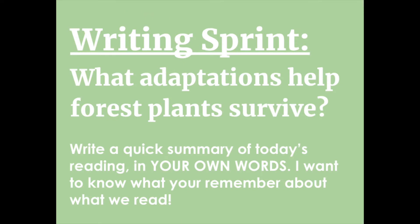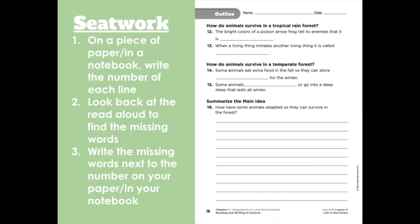On a piece of paper or in your notebook, you're going to be completing today's writing sprint to answer the question: what adaptations help forest plants survive? You're going to write a quick summary of today's reading in your own words — I want to know what you remember about what we read. Now onto seat work. Write the number of each line, look back at the read-aloud to find the missing words, and write them next to the number on your paper or in your notebook. For number 16, summarize the main idea in a few sentences.